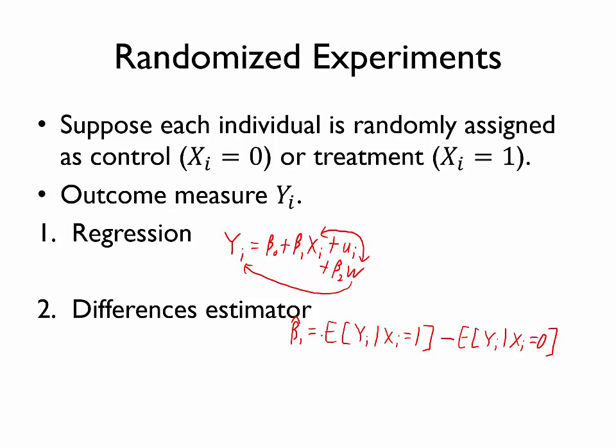So in other words, these are two different ways of thinking about the same thing. Either one should give us in a well-run randomized experiment, either beta 1 hat or this differences estimator, which are one and the same, should give us the causal effect of the treatment.